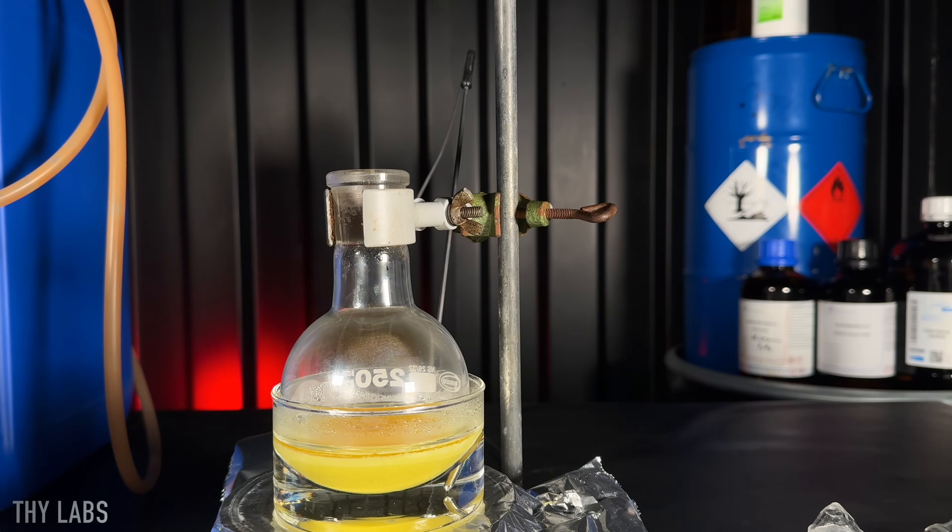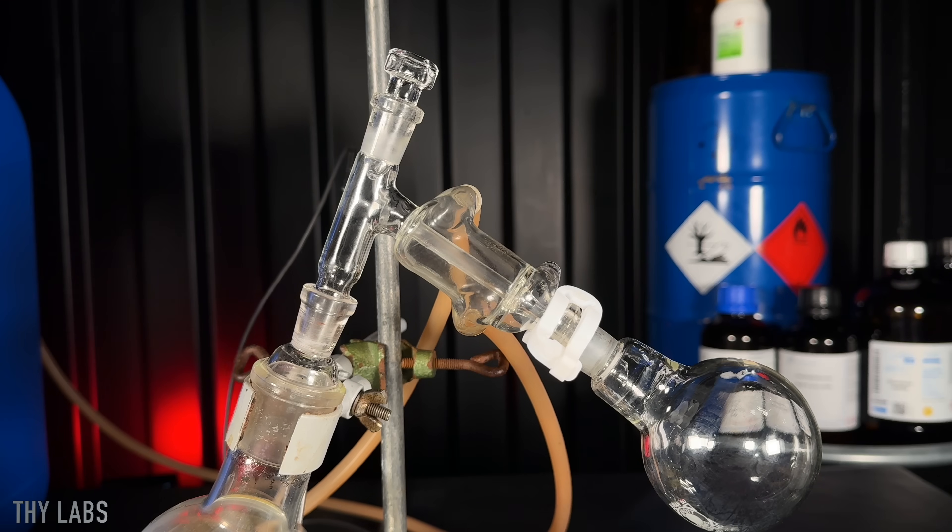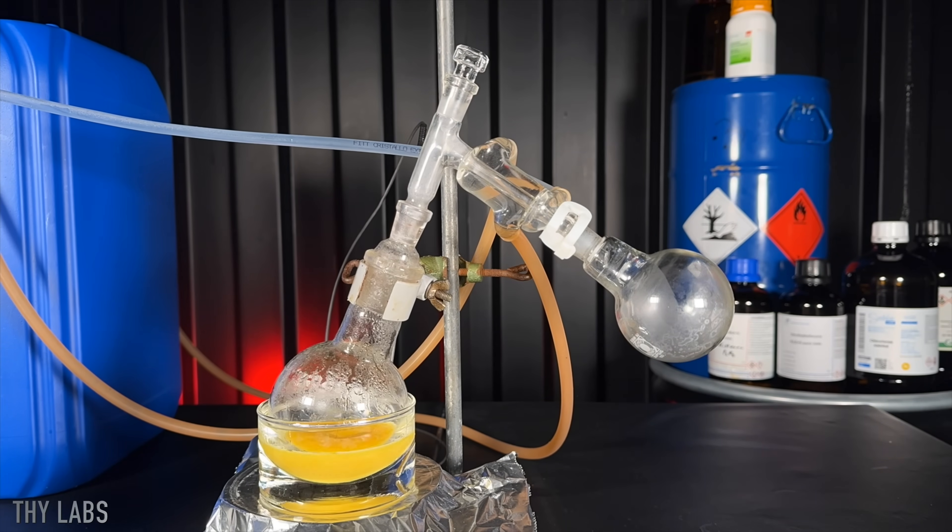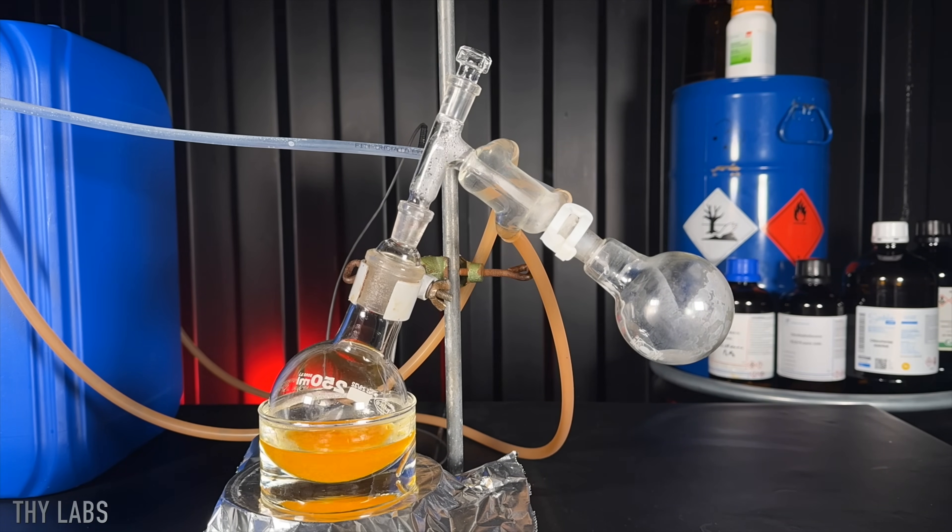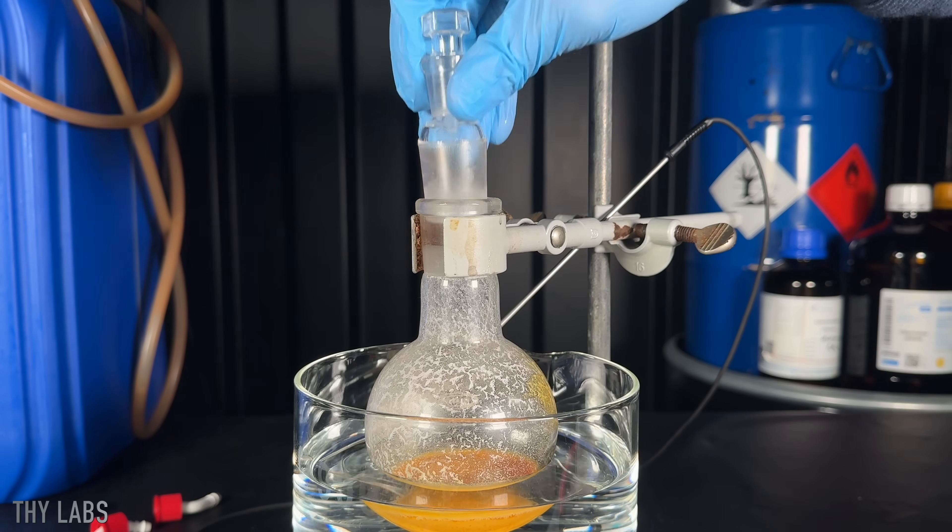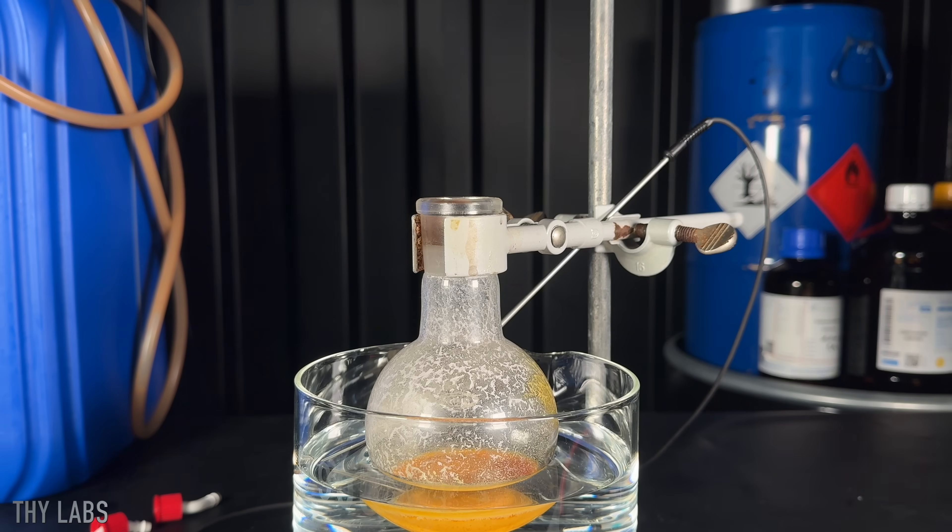Once the reaction was done, I removed the reflux condenser and switched it out for a short path distillation bridge. While I was running the preparation, I thought that removing the formic acid before doing any other step was a good idea. If I did this again, I would skip this step. I wasn't even able to distill a lot of it off and it left some nasty residue in the condenser that was extremely hard to remove.